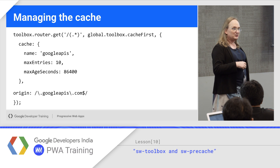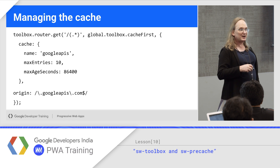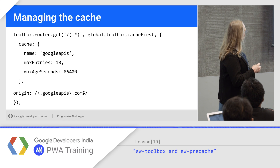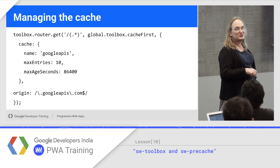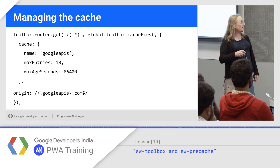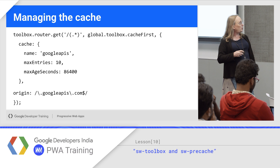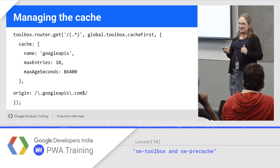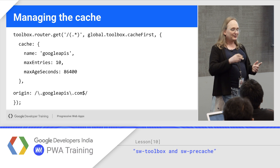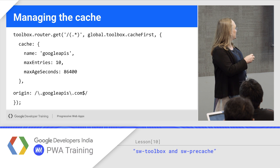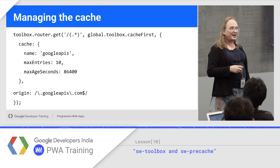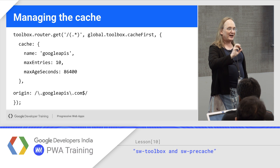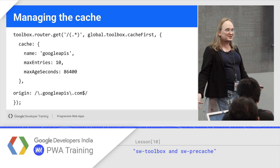For cache management, SW Toolbox lets you do cache management. Notice: name for the cache, max entries, max age seconds — there's actually a big list of options here, so take a look at the documentation. You can also build caches for alternate origins. I can do that right there — I say this is a cross-origin cache, and my service worker will actually watch for those and cache that data too, for things like the Google APIs. Toolbox is really incredibly useful.